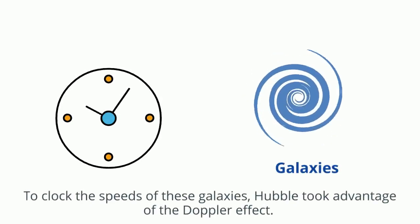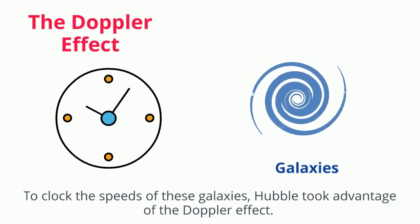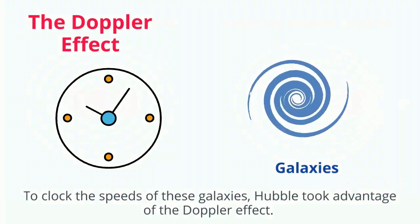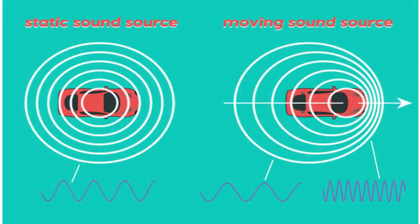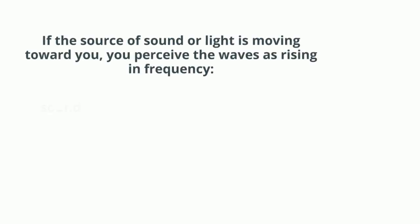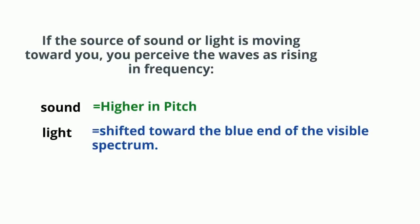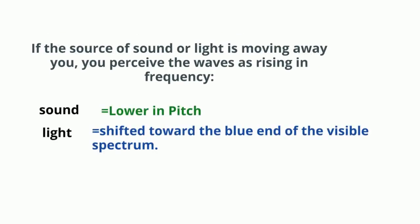To clock the speeds of these galaxies, Hubble took advantage of the Doppler effect. This phenomenon occurs when a source of waves, such as light or sound, is moving with respect to an observer or listener. If the source of sound or light is moving toward you, you perceive the waves as rising in frequency. Sound becomes higher in pitch, whereas light becomes shifted toward the blue end of the visible spectrum. If the source is moving away from you, the waves drop in frequency, sound becomes lower in pitch, and light tends to shift toward the red end of the spectrum.